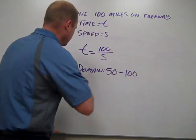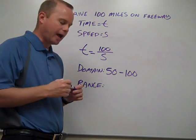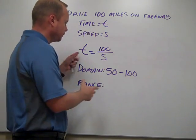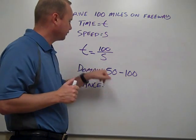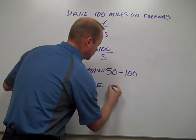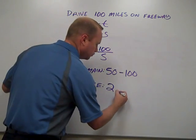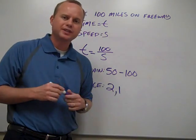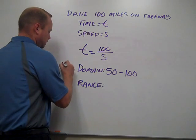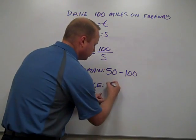Our range is the practical output for whatever our given input is. The range here is t. If the lowest speed was 50, then our lowest t would be 100 divided by 50, which is 2. If we went all the way up to 100 miles an hour, 100 divided by 100 is 1. So we could have a range of anything between 1 and 2 — for example, at 75 miles an hour. Our practical range in this case is anywhere from 1 to 2 hours.